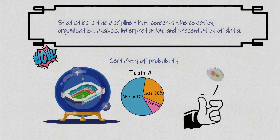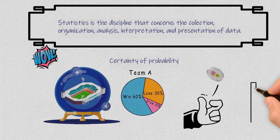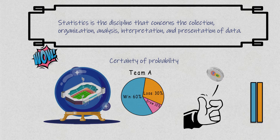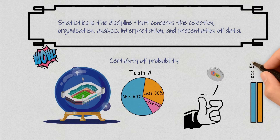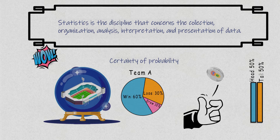Another example: say there is a perfectly even coin, and you flip it again and again for a very long time. You have a 50% chance of seeing heads and a 50% chance of seeing tails, even though you can't tell what the next flip will show because it is random.